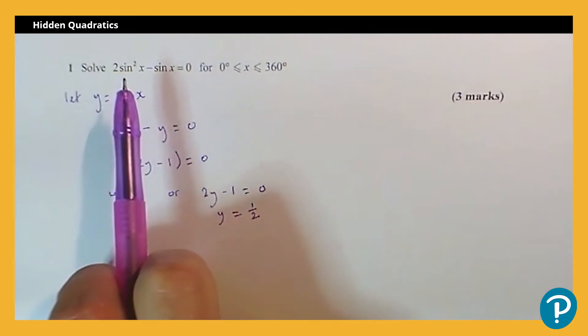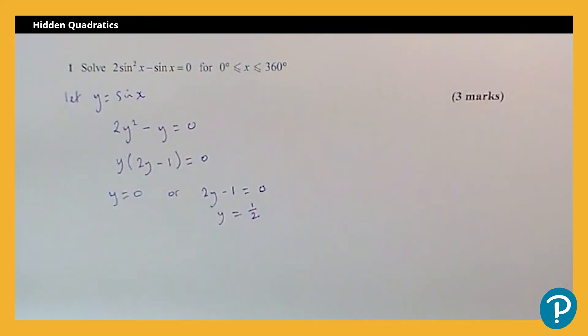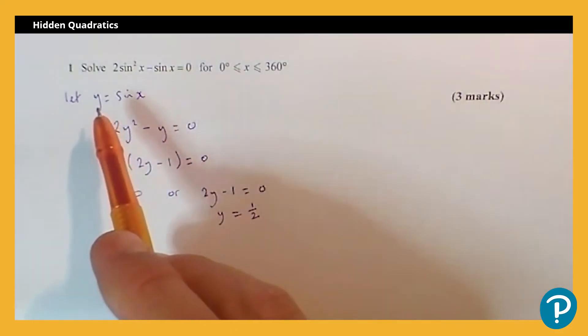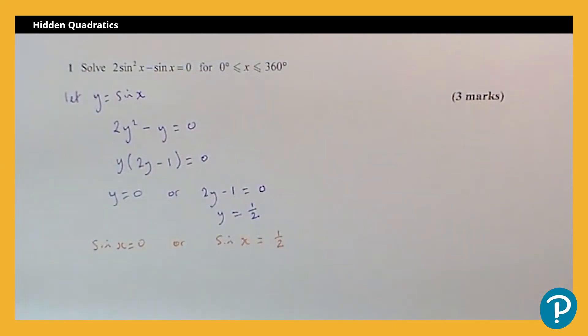However, we haven't solved the initial equation because the equation we were asked to solve was 2sin²x - sinx. So now I'm going to go back to my original substitution. So if y = 0 and y = sinx, that means that sinx = 0 or sinx = 1/2.